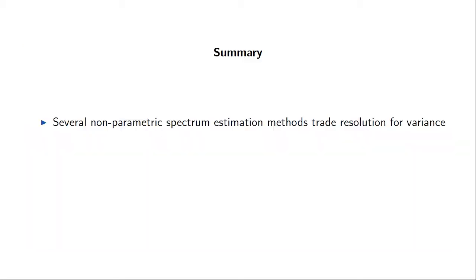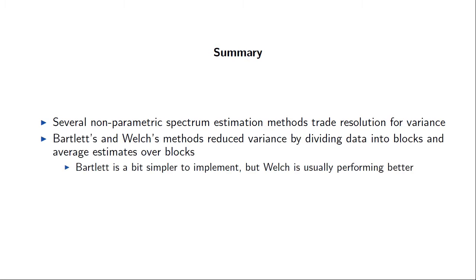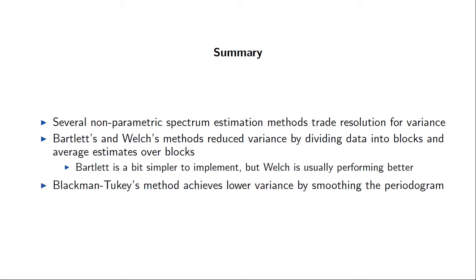To summarize, in this video we saw several non-parametric spectrum estimation methods that traded resolution for improved variance. In Bartlett's and Welch's methods, the full data set is divided into blocks which are averaged; each block uses a periodogram or modified periodogram respectively. Bartlett's method is simpler conceptually, but Welch's method is typically the better choice since its performance is better for the same amount of data. The Blackman-Tukey method achieves lower variance by smoothing the periodogram in the frequency domain, also trading resolution for improved variance.